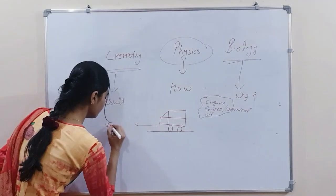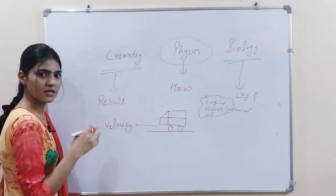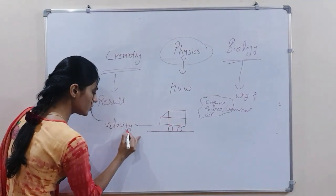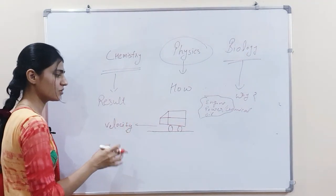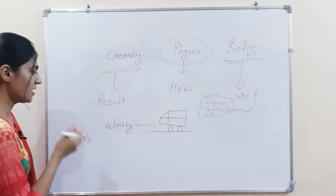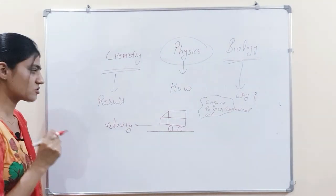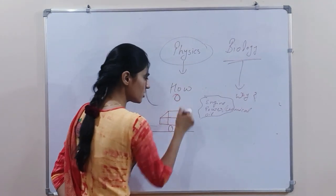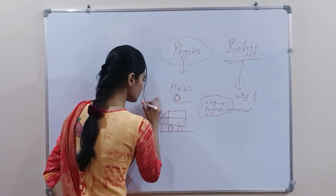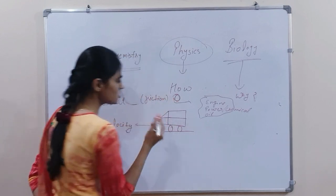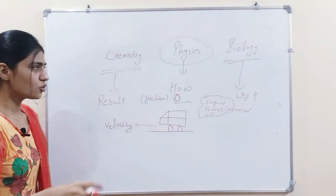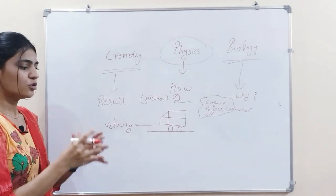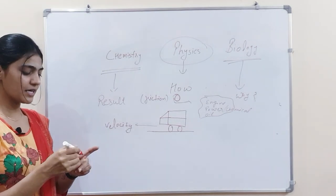This will be our physicist's question. He will concentrate to move in the forward direction, we need velocity. Then the other question is, what we need to do that the wheels are rotating? This is the question of how. Physics gives us an authority to ask how.